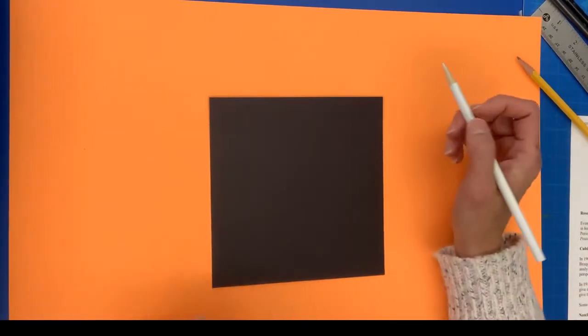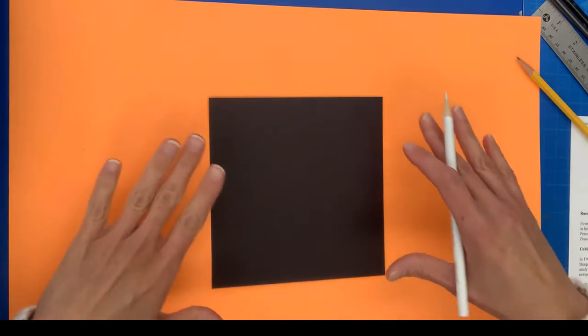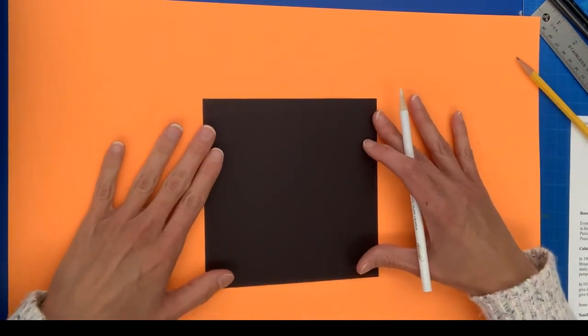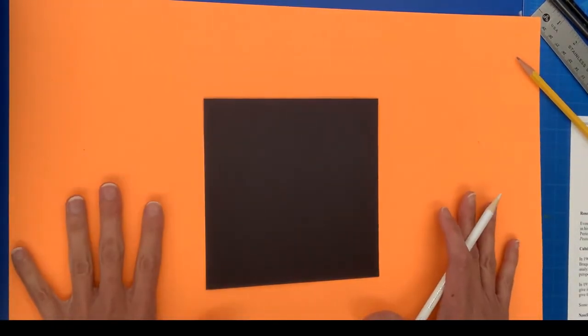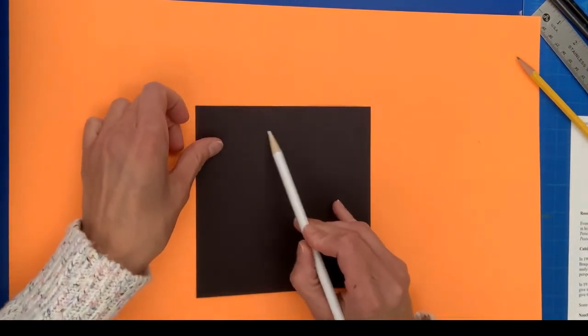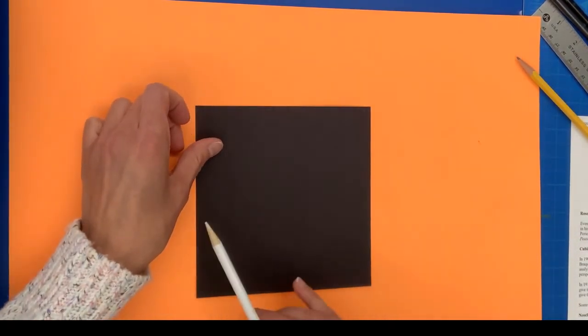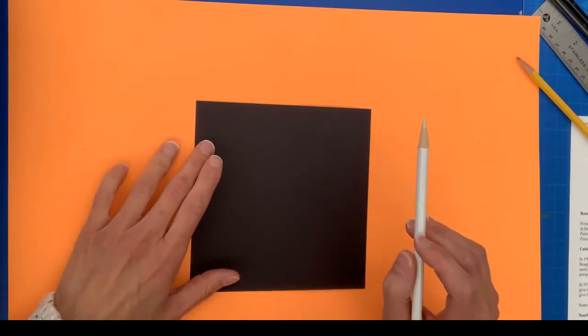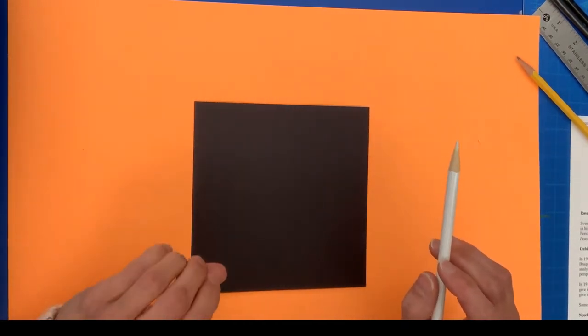All right, so now we're ready to begin making our notan. You should have a square piece of black paper and a background sheet of paper. What we're going to do is draw and cut out shapes on all four sides of the square. This lesson really focuses on positive space, negative space, and balance.